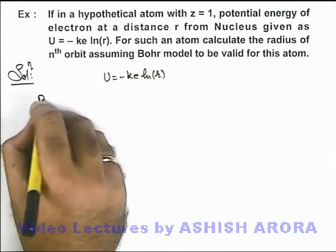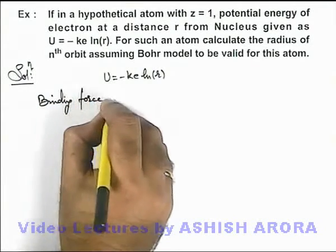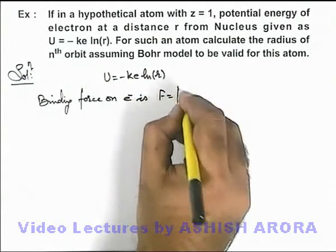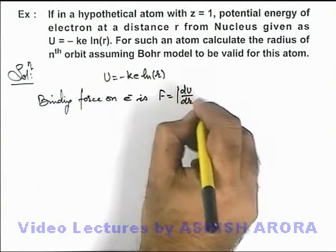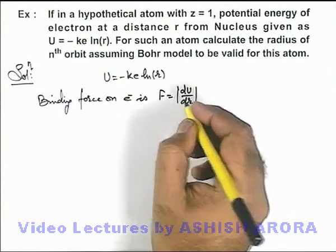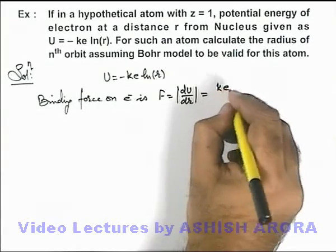Using this, we can directly find the binding force on the electron. This force can be written as |dU/dr|, which provides the centripetal force for circular motion. On differentiating, we get ke/r.